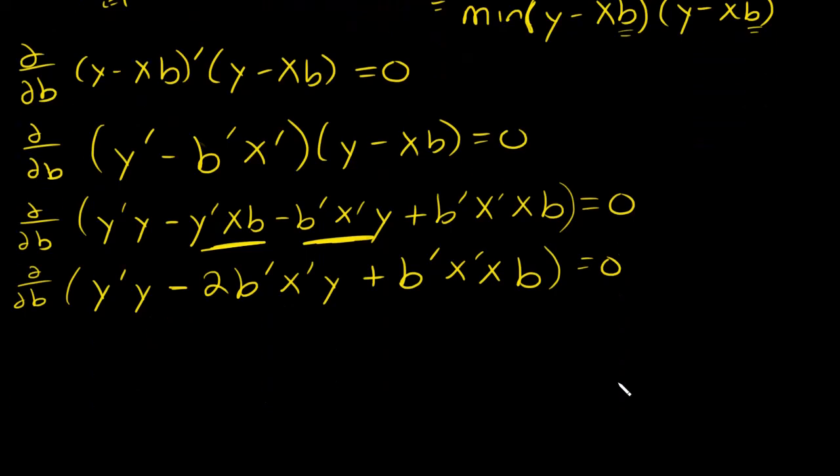Now I'm ready to take the derivative. The partial derivative of y transpose y with regards to B is zero. The partial derivative with regards to B of 2B transpose X transpose y, basically the B transpose will get dropped and you'll be left with negative 2X transpose y. Then the derivative of this back term with regards to B, basically you see two B's, think of it like b squared, so one of the B's will get dropped and you're left with 2X transpose XB equals zero.